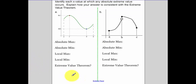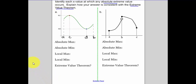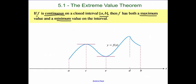Okay, let's talk about a few examples. The interval goes from a, c, d, and b. Identify where our absolute extreme value happens, and then whether or not this is consistent with the Extreme Value Theorem. There's one thing I highlighted in the Extreme Value Theorem: continuity. You have to have continuity.